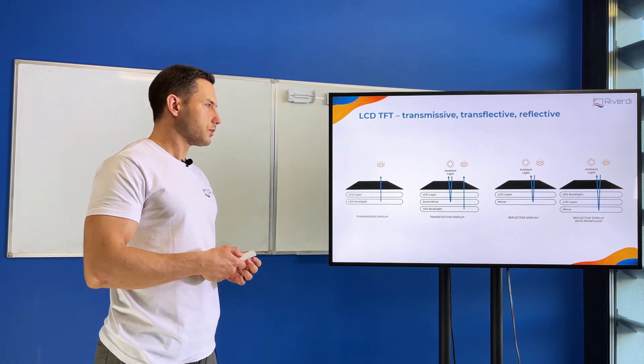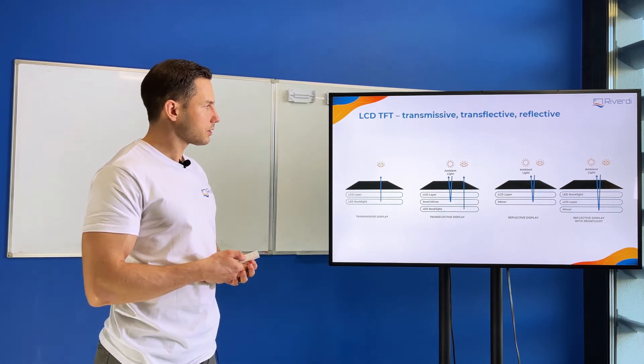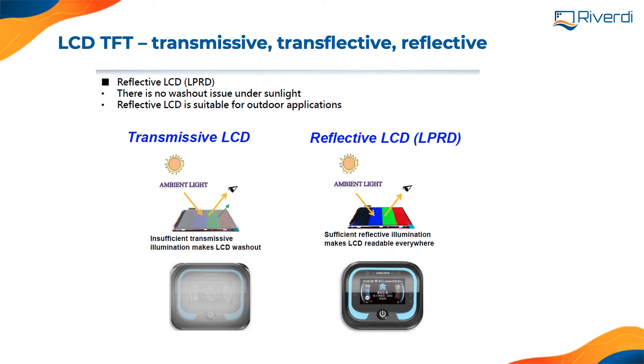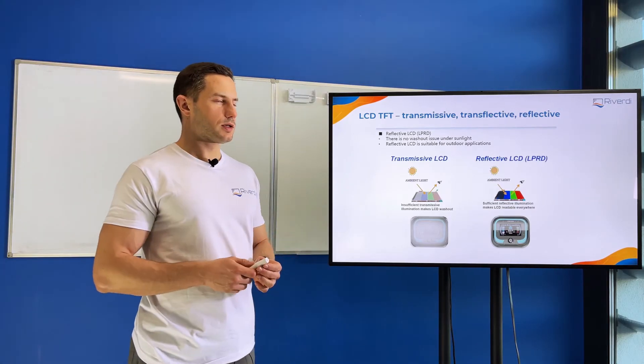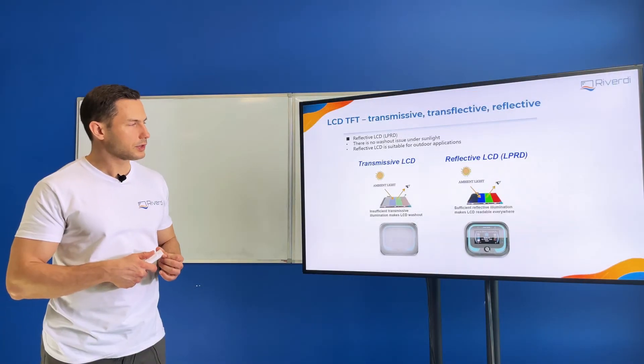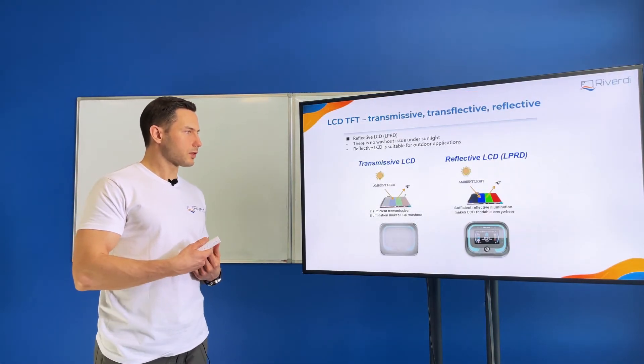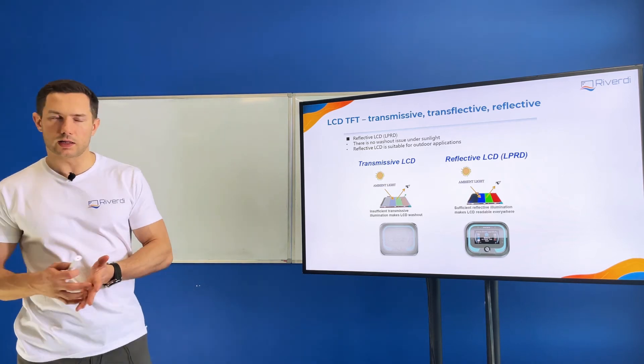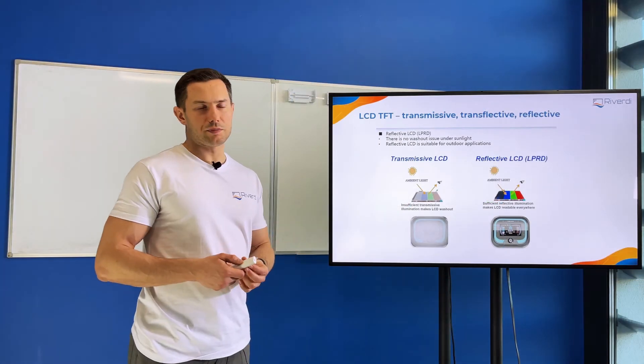Here we have the display called LPRD, low power reflective display. This kind of display uses the environment ambient light to reflect and still produce some colors. The colors are not perfect, not perfectly clear, but this technology is getting more and more popular because it allows having a color display in battery-powered applications.